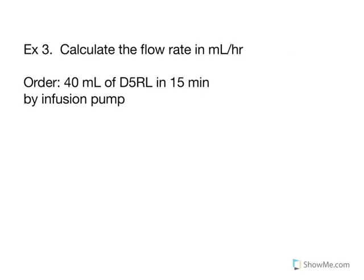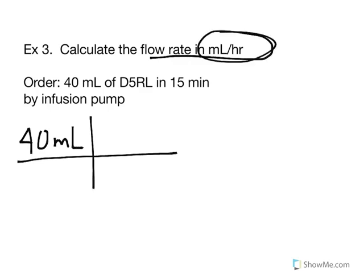In example 3, calculate the flow rate in milliliters per hour. The order is for 40 milliliters of a dextrose solution in 15 minutes by infusion pump. I'm going to start, as always, with my order: 40 milliliters. Because my question tells me I want my flow rate in milliliters per hour, I'm going to go ahead and list my solution units as milliliters per hour. Notice I already have milliliters on top. What I'm looking for is hours on bottom.